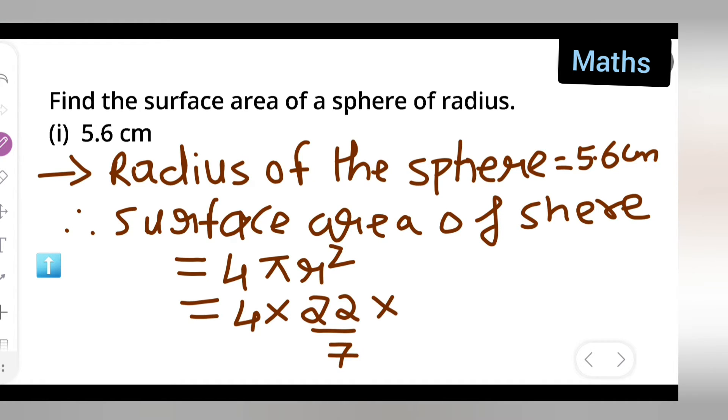Then what is the radius over here? Radius is given to be 5.6 cm. So write down 5.6 square. Square, write it properly.